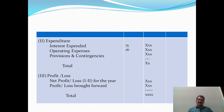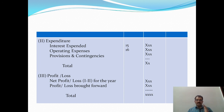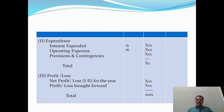Under expenditure, Schedule 15 and Schedule 16 are listed, along with Provisions and Contingencies, for which no separate schedules are prepared. Adding these three items gives Total Expenditure. The difference between Total Income and Total Expenditure is treated as Net Profit or Loss for the year. To this, profit or loss brought forward from the previous year is added to arrive at the total profit.